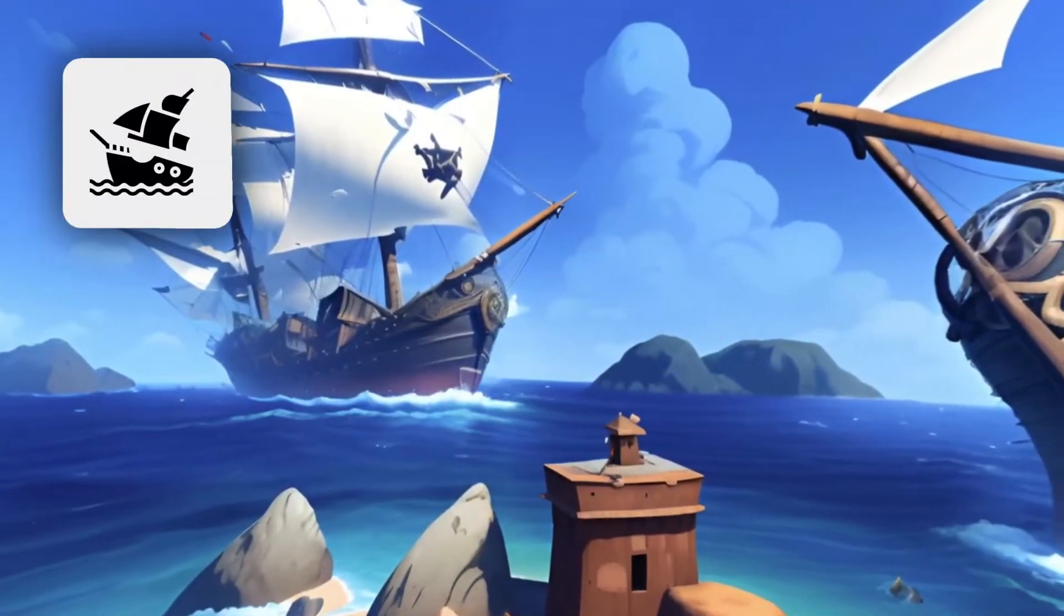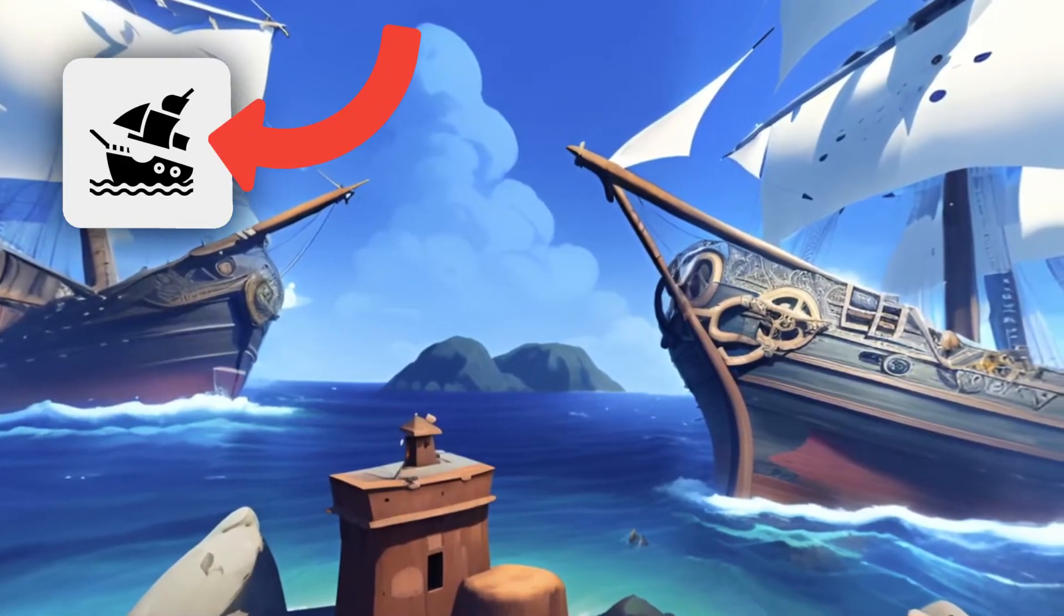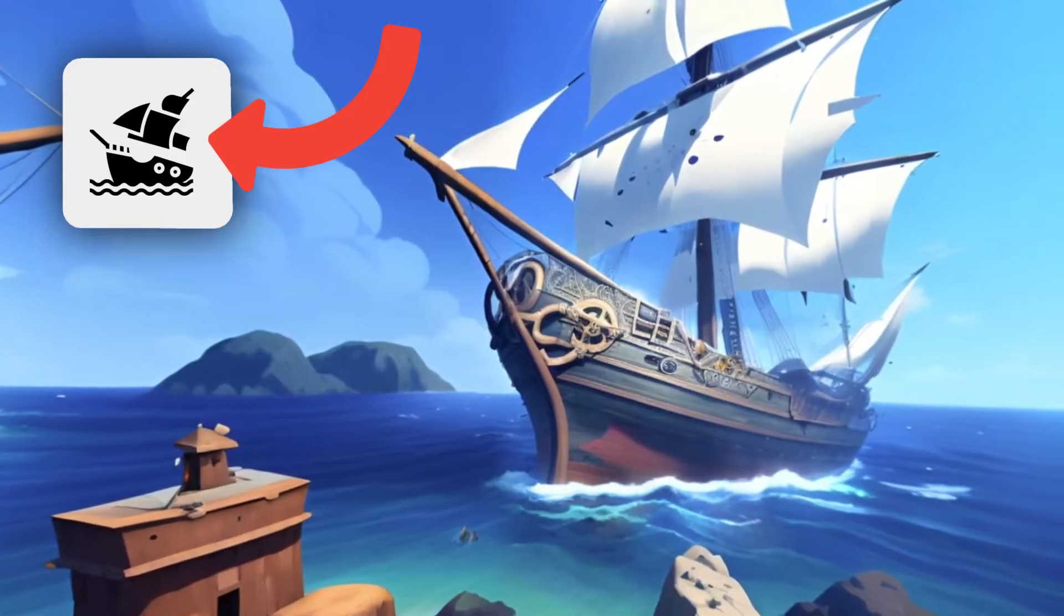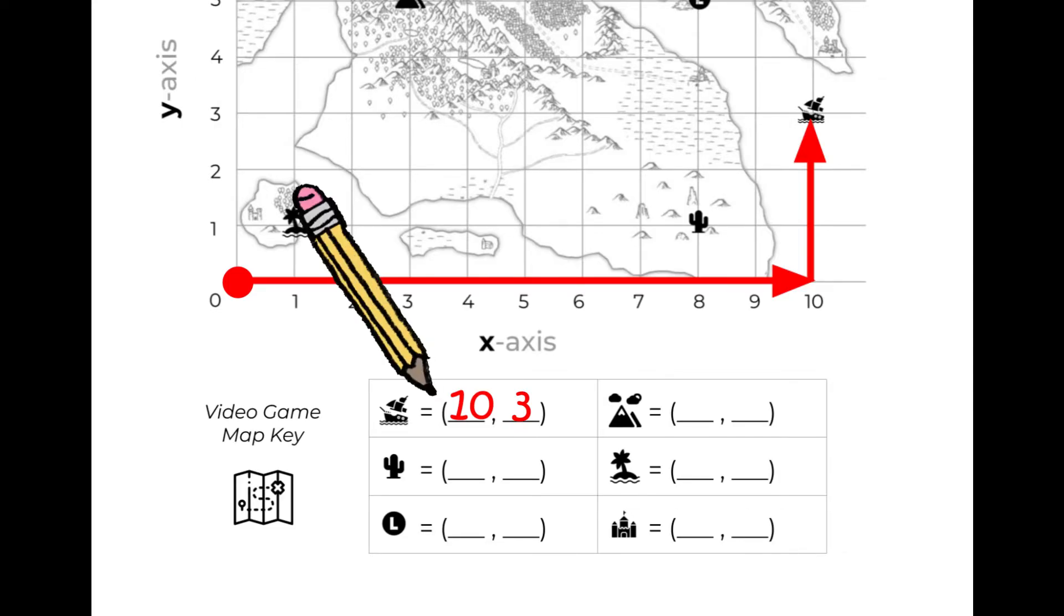The first location is called Pirate's Cove. Look for this location on the map. It's right here. To get there, we need to follow three steps. First, we begin at the origin. Next, we need to move ten places on the X-axis. And finally, we move up three places on the Y-axis. So Pirate's Cove is at the point 10, 3. If you haven't already, go ahead and write the ordered pair on your map key.